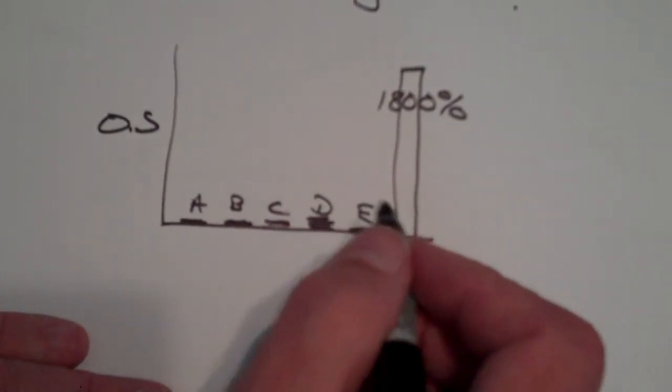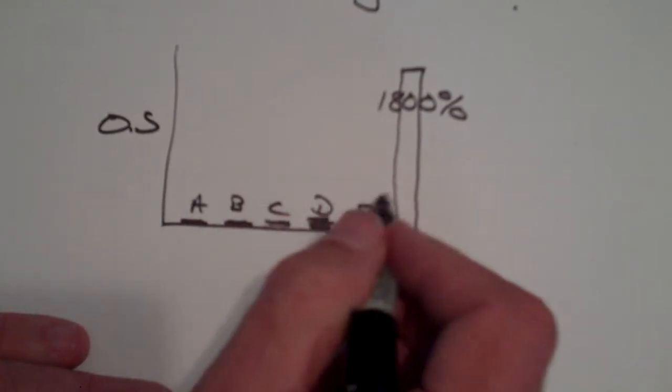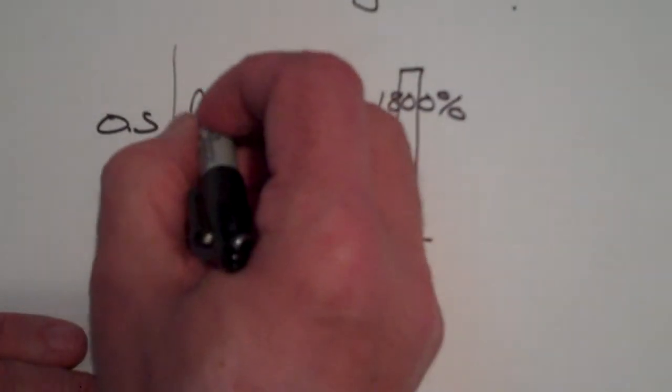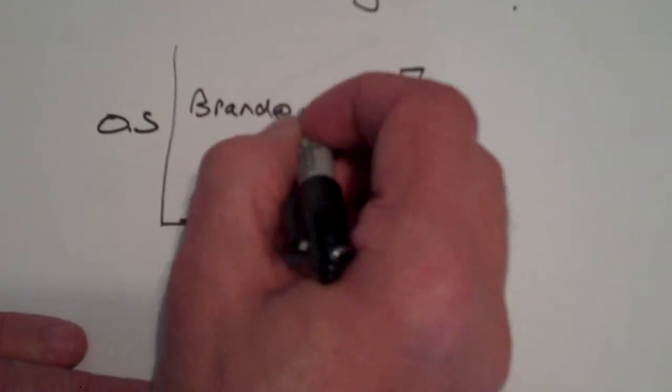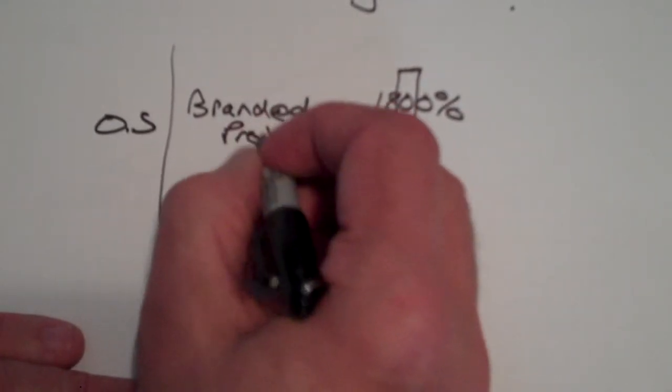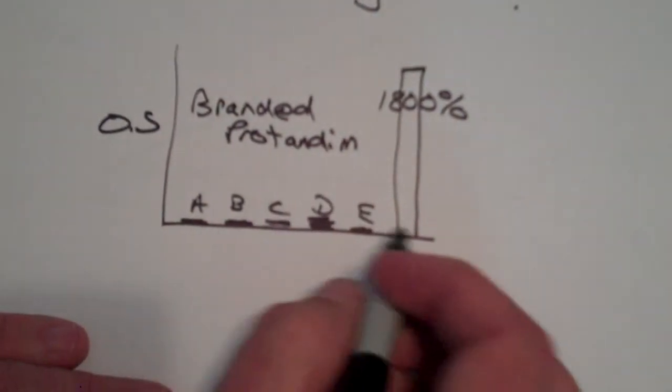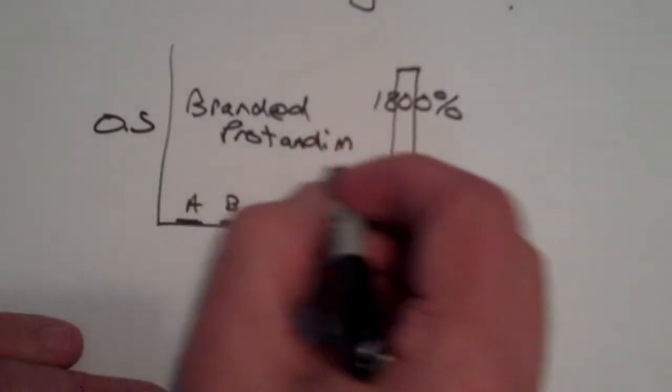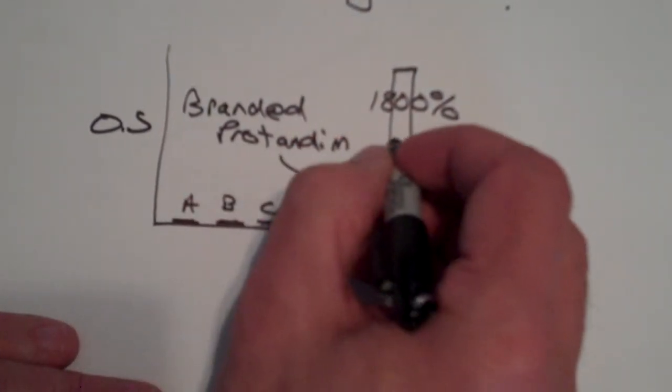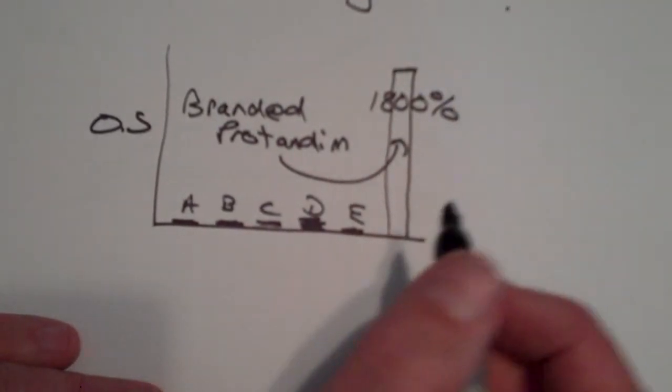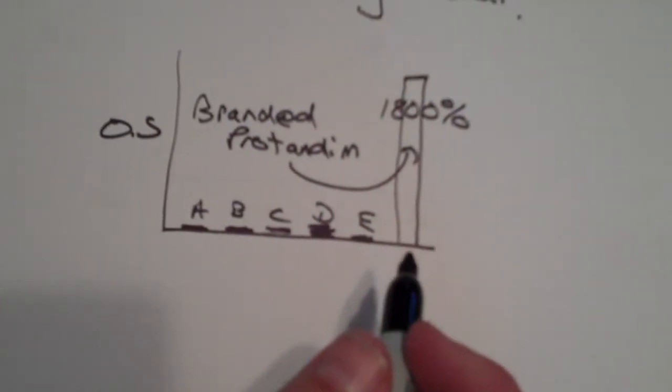it really is not the ingredients names what they are, it's the branded product, Protandim, that's important here. And it is made up of these five herbs, and together, this branded product, Protandim, reduces oxidative stress by 1800%.